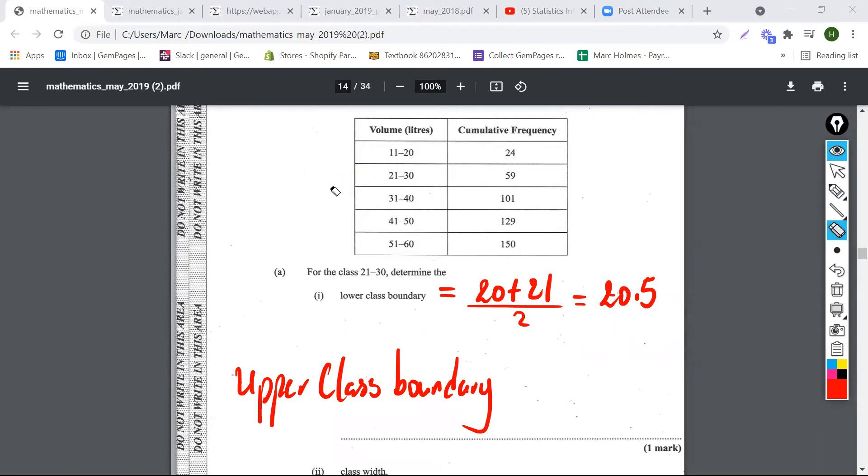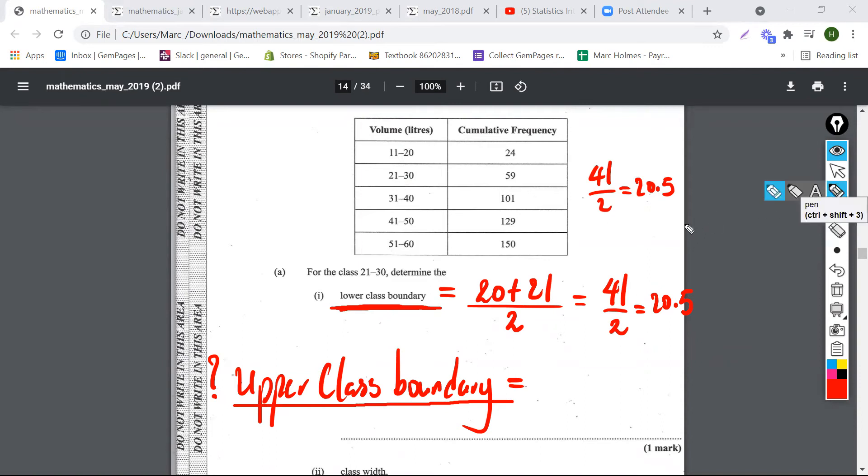So that would give us the lower class boundary. So the next thing, suppose they ask us for the upper class boundary instead of lower class boundary for the same class 21 to 30. What would that be? Well basically, it's very similar to the lower class boundary. Remember the lower limit for the class is 21 and the upper limit for the class is 30. So to find the upper class boundary we'll have to use the 30 and the 31 and we'll add 30 plus 31 and put it over 2, and that would give us 61 over 2, which is the same thing as 30.5.